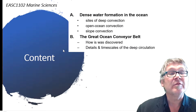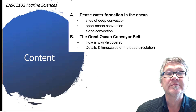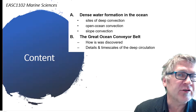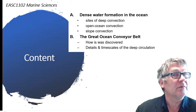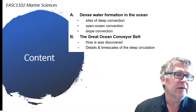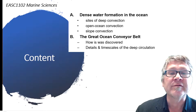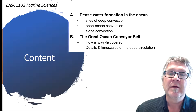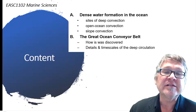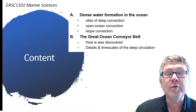In this lecture we talk about the formation of heavy water — the formation of dense water in the oceans. Where does this formation of dense water take place? We look at the sites of deep convection, and here is a big surprise, because there are only a few sites that actually support the formation of dense water in the ocean. Then we talk about the formation mechanism: one is called open ocean convection and the other one is called slope convection.